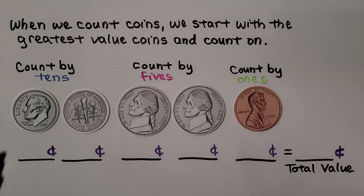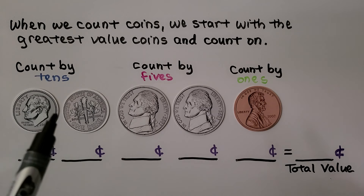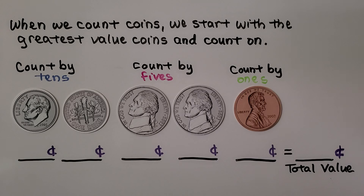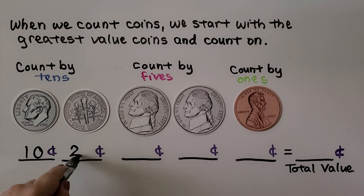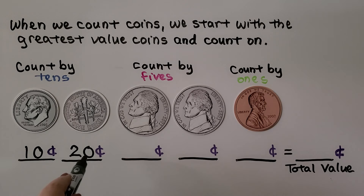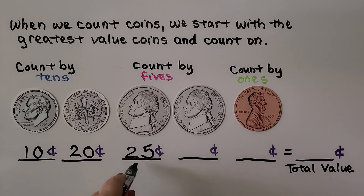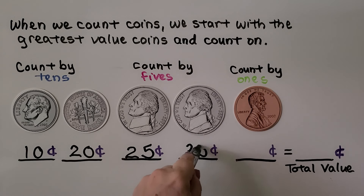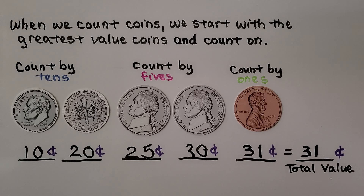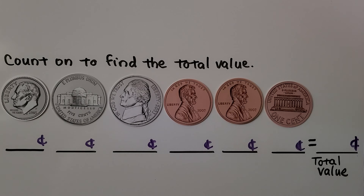When we count coins, we start with the greatest value coins and count on. Here we have 2 dimes — that's the greatest value — 2 nickels as the middle value, and pennies as the least value. We count by tens: 10, 20. Now we add a nickel: 20 plus 5 is 25. We add another nickel: 25 plus 5 is 30 cents. We add a penny — that's 1 cent — which means the total value of these coins is 31 cents.